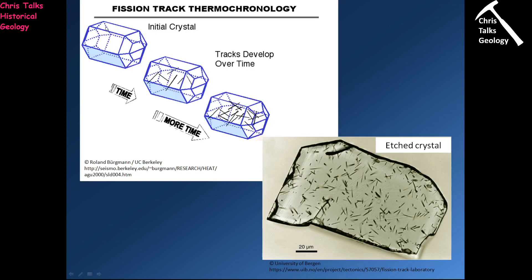Here is the basic idea: we have our apatite crystal containing uranium. That uranium decays, fires out an alpha particle, and the alpha particle smashes into the crystal lattice, damaging it. We then take the apatite crystal, dunk it in acid, and the acid dissolves away the damage done by the alpha particle. You can see these lines — each one is damage produced by a single alpha particle. Since radioactive decay is constant, for every 10 million years you might get 1,000 alpha particles, so you would see 1,000 lines.